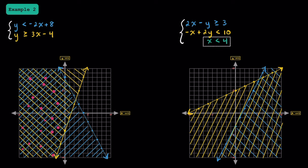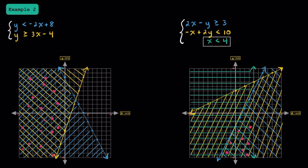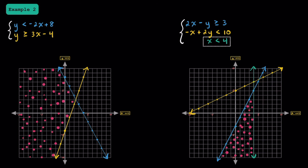Here's our dashed line for the second inequality, and testing (0, 0) works, so we shade below this line. All the points below this yellow line are solutions to this linear inequality. Now let's look at the last inequality where we have x is less than 4 — that's just going to be this green vertical line at x equals 4. Make sure you have a dashed line, and testing (0, 0): since 0 is less than 4, we shade to its left. Only the area that got shaded all three times represents the solutions for the system. The areas in which these dots are located represent the solutions to these linear inequalities.